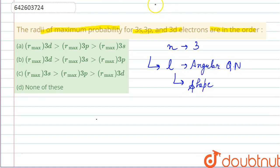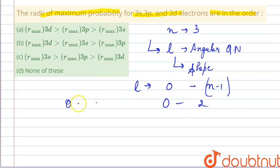Now we know that the value of l lies between 0 and n minus 1. We are given n as 3, so it will be 0 to 2. That is, it is 0 for s subshell, 1 for p, and 2 for d.